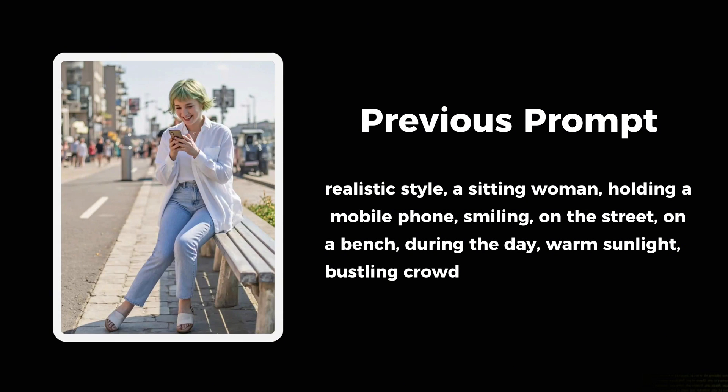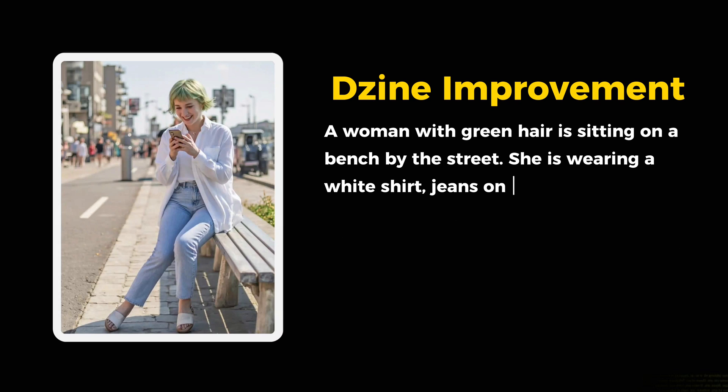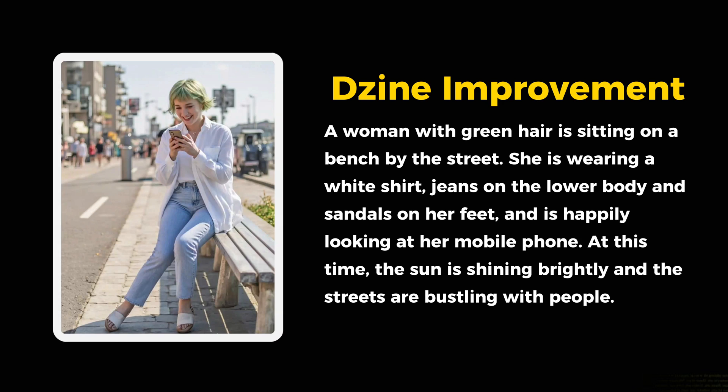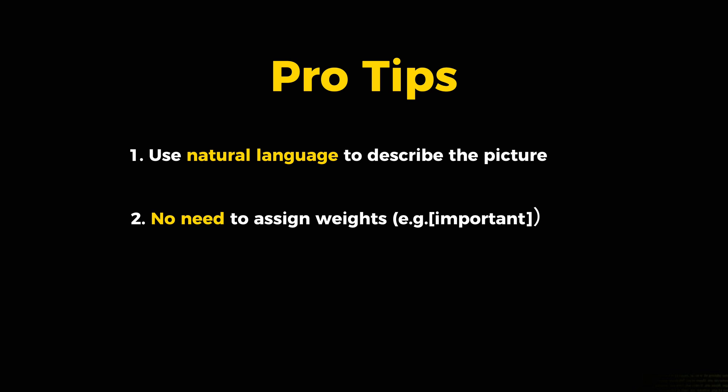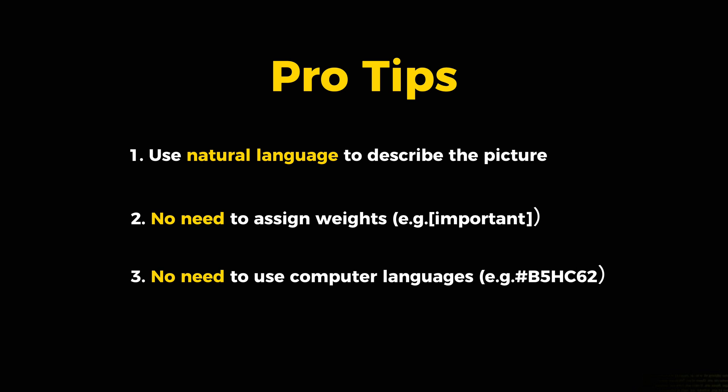In the past, when we generated images, we always used short phrases or tags to write prompts. But design can now understand natural sentence-style prompts, and even respond better to sentence-style prompts. Pro tip: use natural language to describe the picture, just as you would when speaking to others. You don't need to assign weights, such as the method of using parentheses to increase weights in web UI. You don't need to use computer languages to describe the picture, such as RGB values or technical signs.